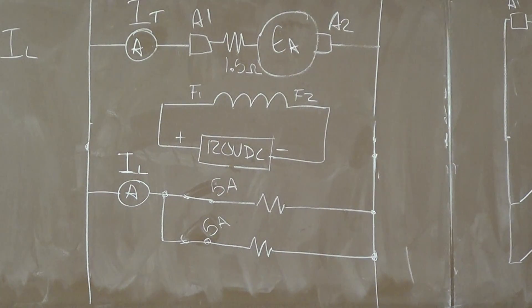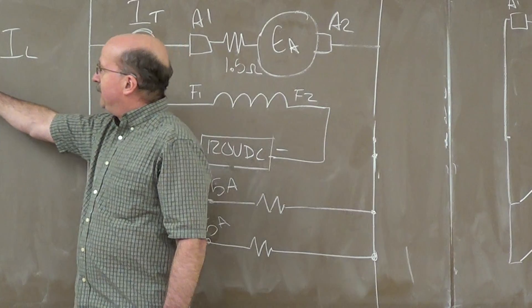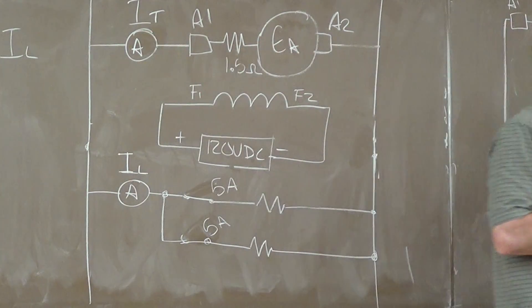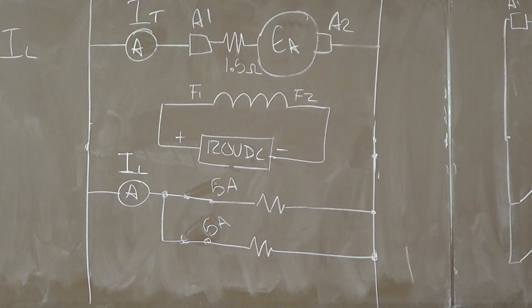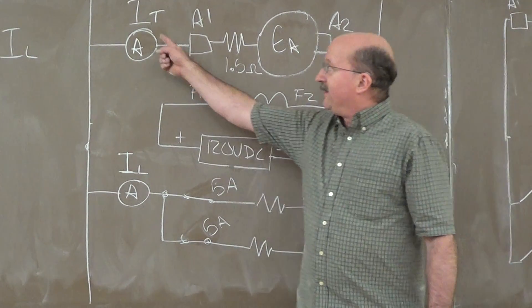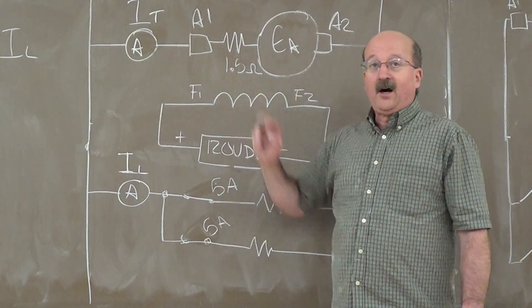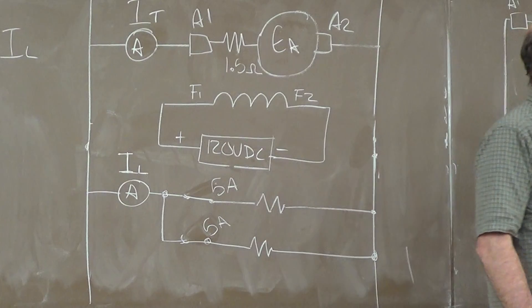But if you look at this, all of our calculations, IT is now real simple. IT is just equal to our IL, isn't it? Nothing else to consider. We change our load current, that's our total current. Turn our load current off, our total current goes off.